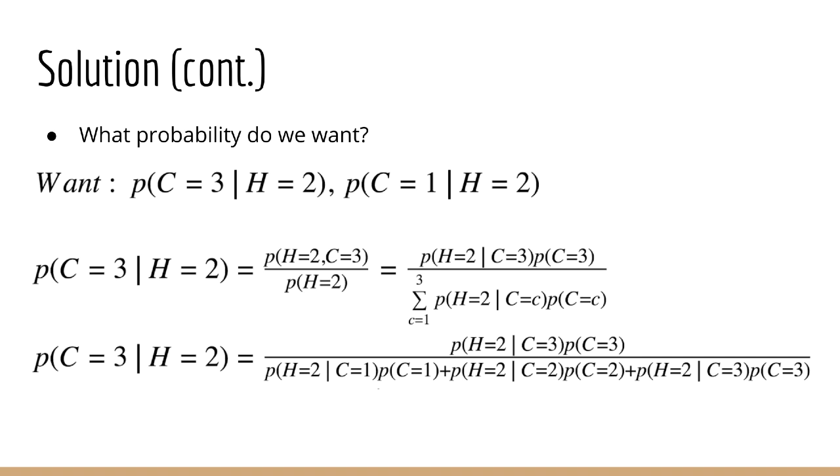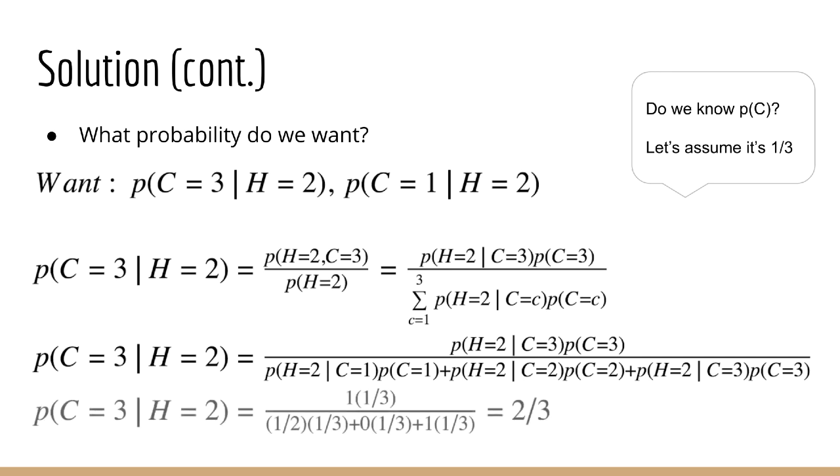Now you might wonder, how do we know what P of C should be? Well this is just the prior probability that a car is behind any one of the doors without any other information. We can assume this is one third, since there is no reason to believe that the producers of the show would be biased towards any particular door. After plugging in the relevant values, what do we get? Well this probability comes out to one times one over three all over one half times one third plus zero times one third plus one times one third. And that is all equal to two thirds.